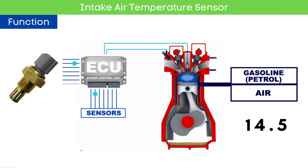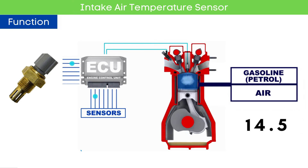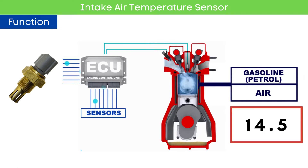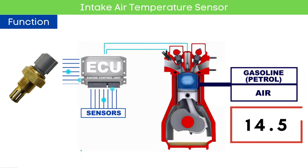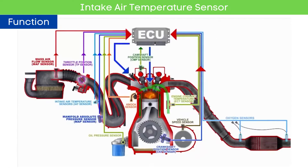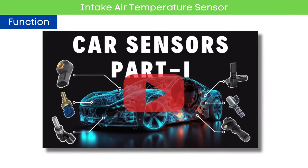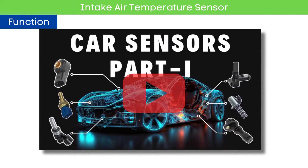By combining the data from the IAT sensor with other engine management system sensors, the ECU calculates the mass of air entering the cylinder and maintains the proper air-fuel ratio. If you want to know all the sensors of the engine management system, you can check our detailed video on car EMS system sensors. Check the link in the corner.